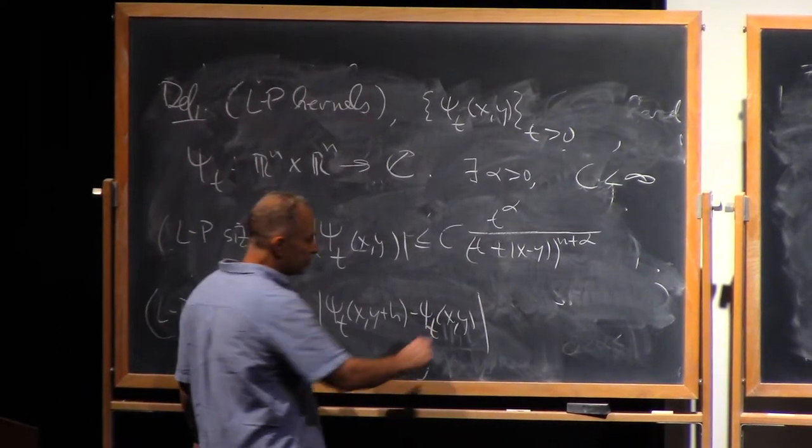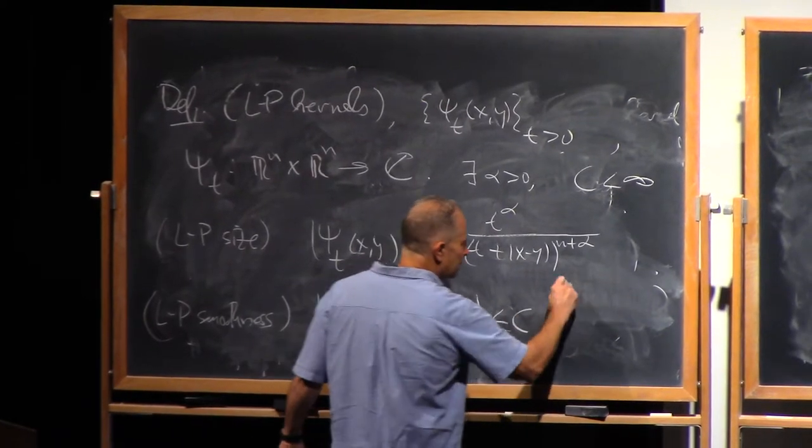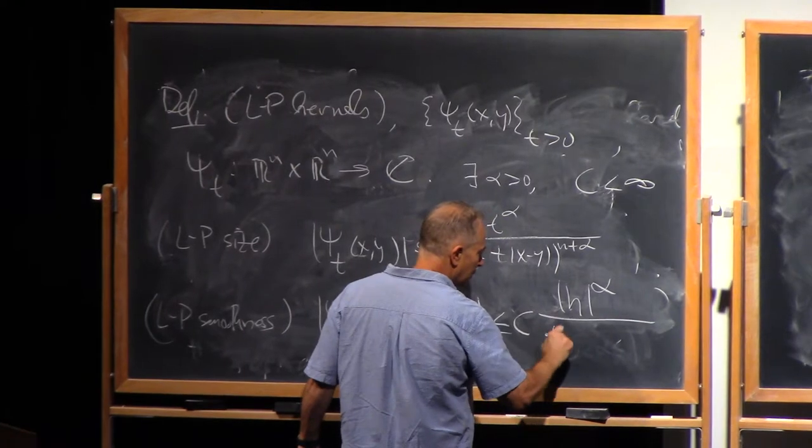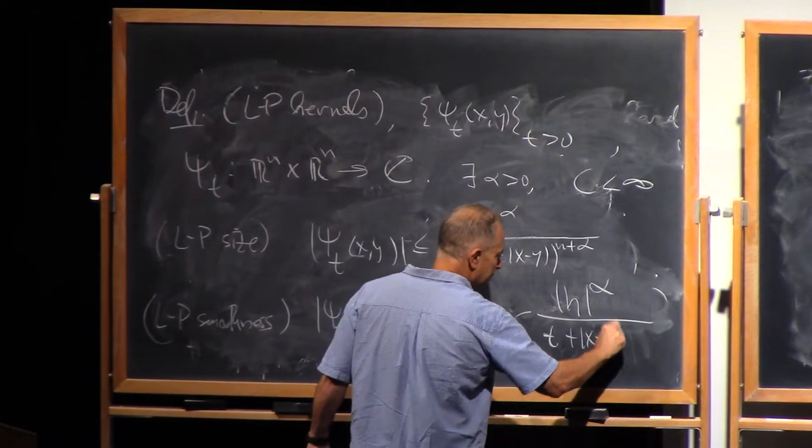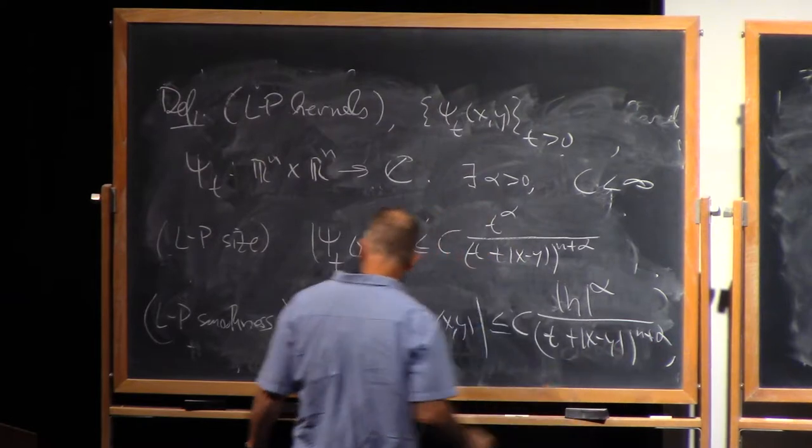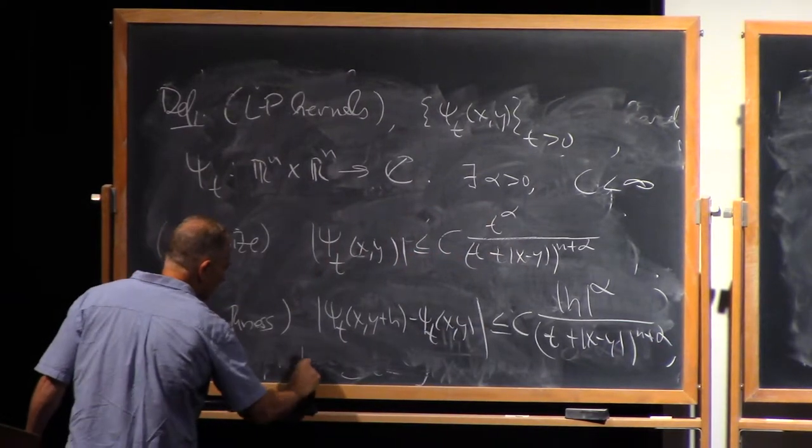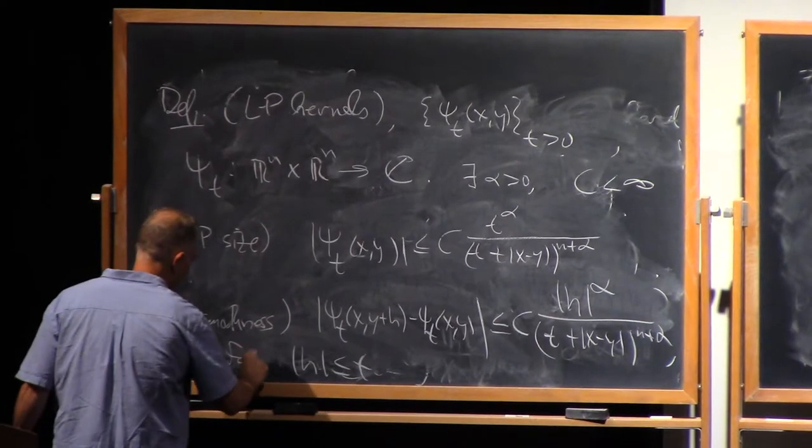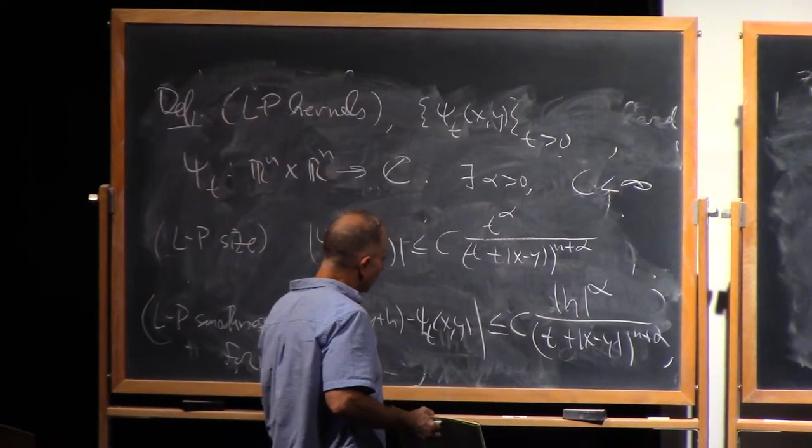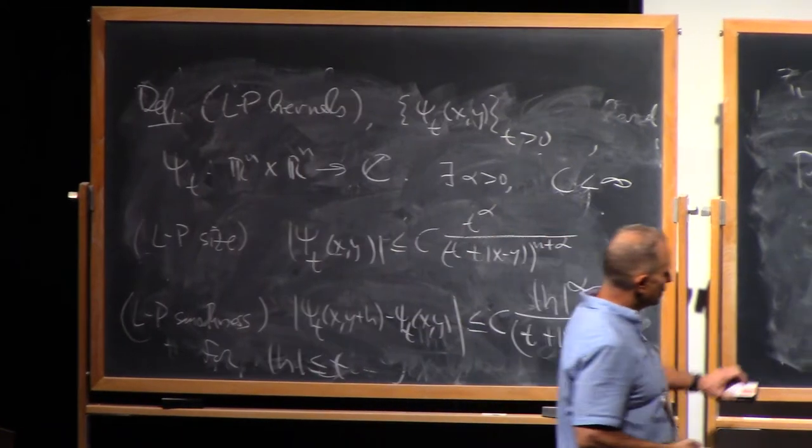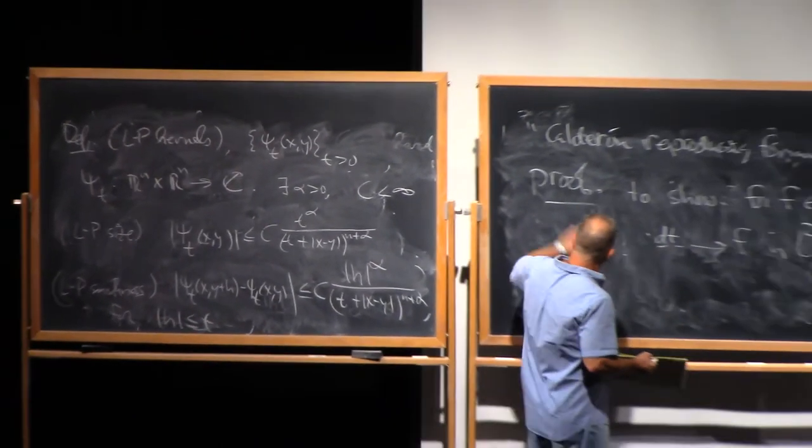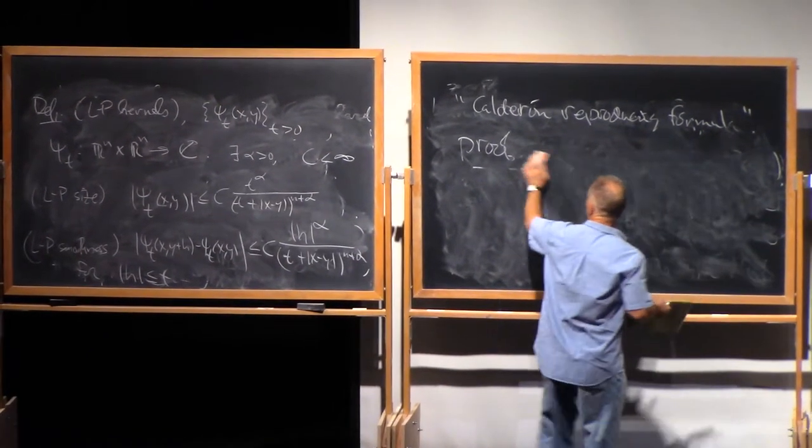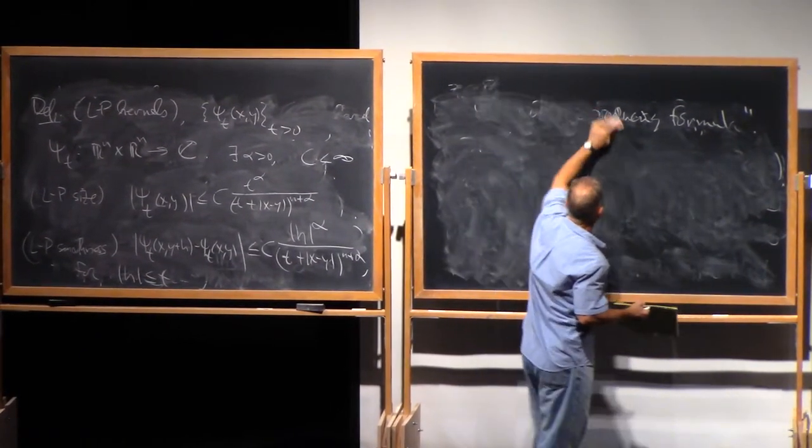So the bound should be c times length of h to the alpha over t plus |x minus y| to the n plus alpha. And this is to hold, provided that length of h is less than or equal to t. So a kernel with those bounds satisfies the Littlewood-Paley size and smoothness condition, or generally, the Littlewood-Paley kernel condition.